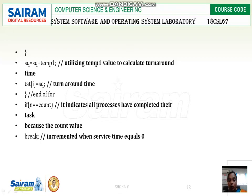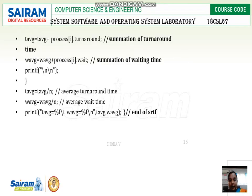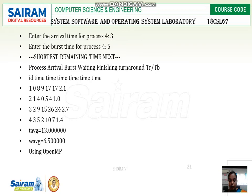We use temp1 to calculate the turnaround time using the formula: completion time minus arrival time. When service time equals zero, the count increments, indicating all processes have completed. Waiting time is then easily calculated as turnaround time minus burst time. This is the summation of turnaround time and waiting time. Now we will see how to compile the program.